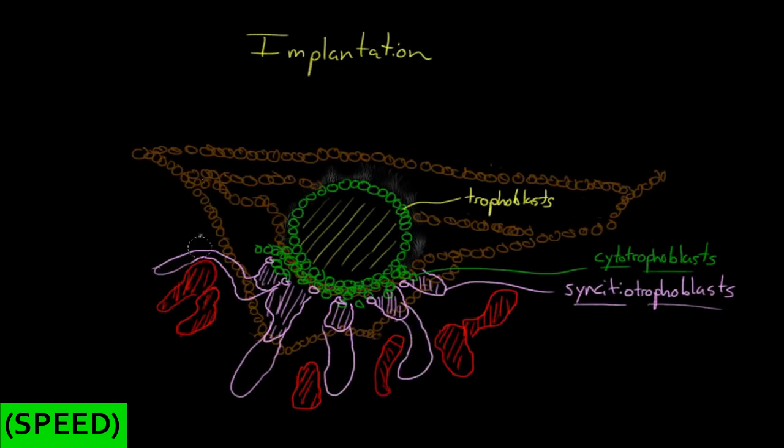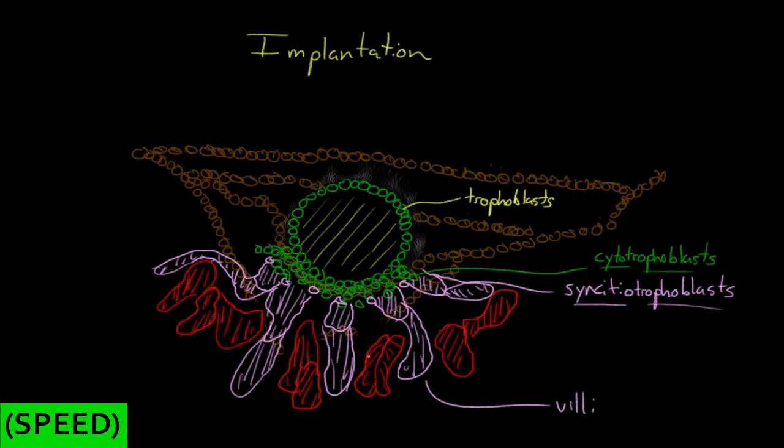Now, our syncytiotrophoblasts continue to grow. And they form these finger-like projections that go out into the endometrium. And these finger-like projections are called villi. But the uterine blood vessels, which are now really just pools of blood, continue to grow and fuse as well.